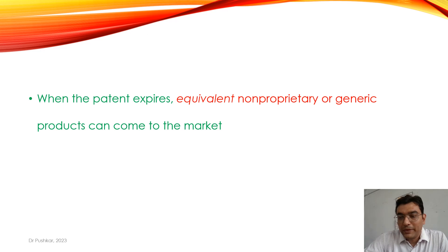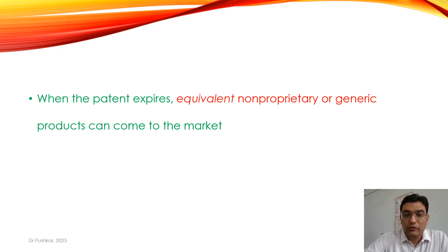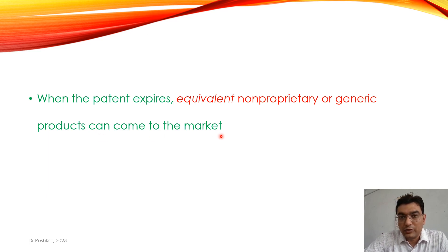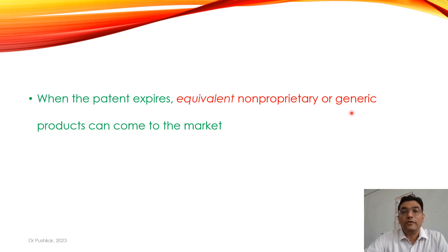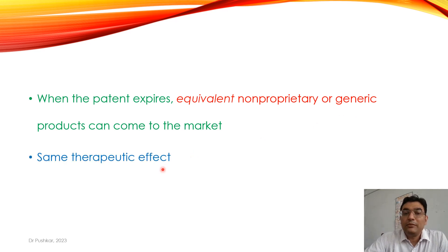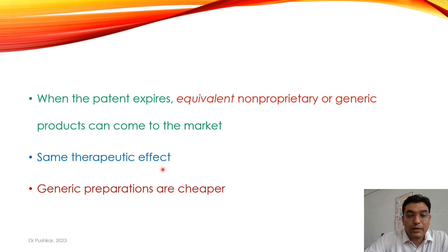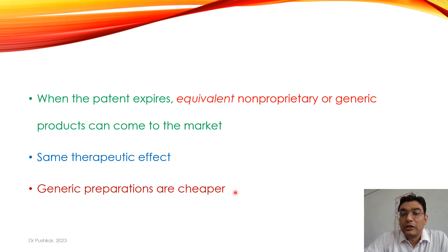What happens when the patent expires? Once the 20 years is over, any manufacturer can develop an equivalent non-proprietary or generic product and market it. A generic product is an exact copy of the innovator product and has the same therapeutic effect. These generic preparations are much, much cheaper because they did not bear the huge development costs that the innovator company had to bear.